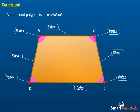Quadrilateral ABCD has four sides: AB, BC, CD and DA. It has four angles: A, B, C and D.